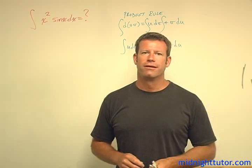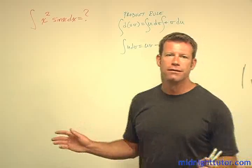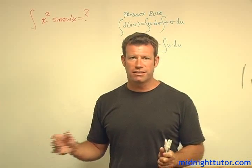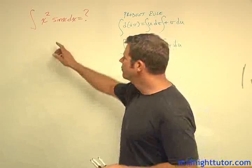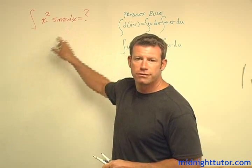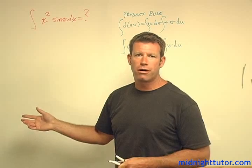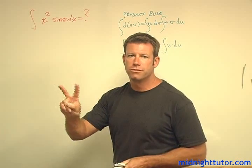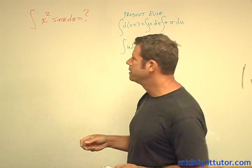Okay, welcome back to Midnight Tutor. This is another one of those classic integration by parts problems. The last video was the integration where you have an e to the x term times a trig function, which you can solve by integration by parts in two steps, two iterations, so to speak.